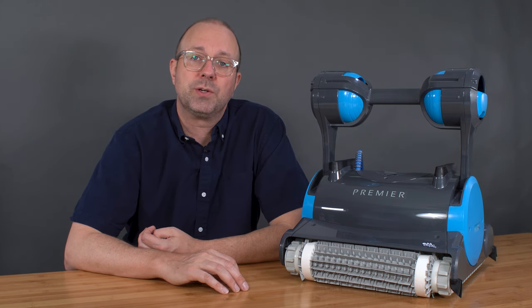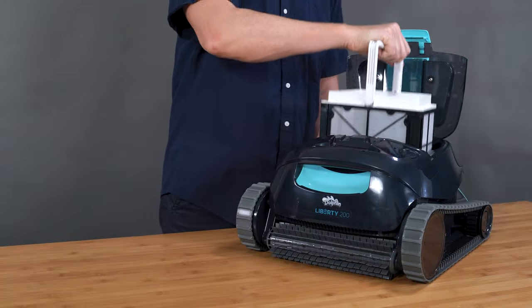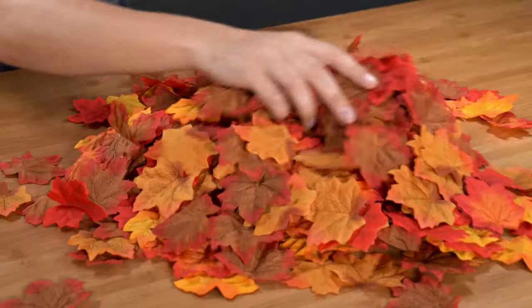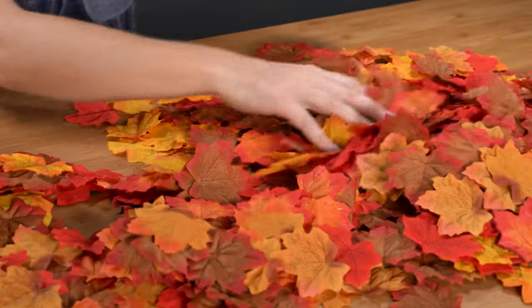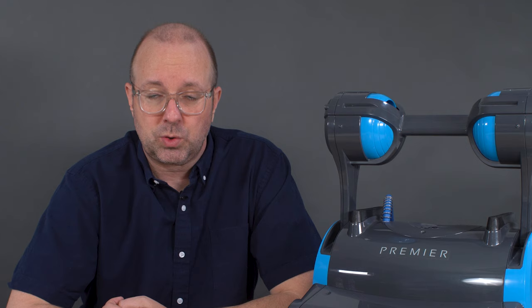It will also reduce turbidity and help clear up cloudy water. The nano filter captures what the standard fine filter misses. It also captures larger debris like leaves, twigs, and more. So it truly does it all. Make sure your robot has a nano filtration filter when picking a robotic pool cleaner.